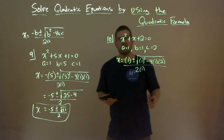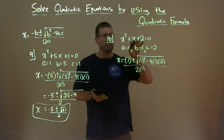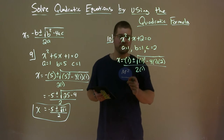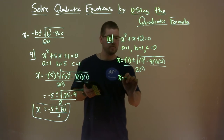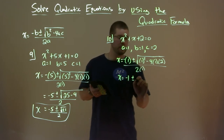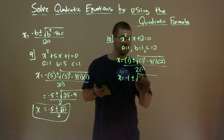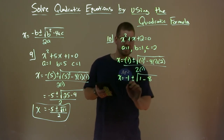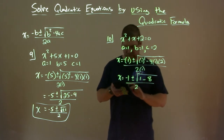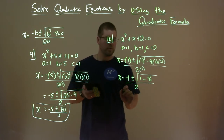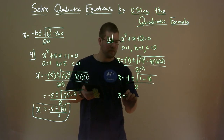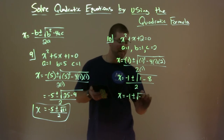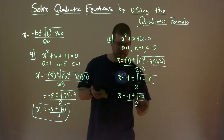I usually like to put parentheses around the values I'm substituting in — it really helps me make sure I don't forget anything. So we have x equals negative 1 plus or minus the square root of 1 squared, which is 1, minus 4 times 2, which is 8, all over 2. Hopefully you're seeing something a little off here — x equals negative 1 plus or minus the square root of 1 minus 8, which is negative 7, divided by 2.